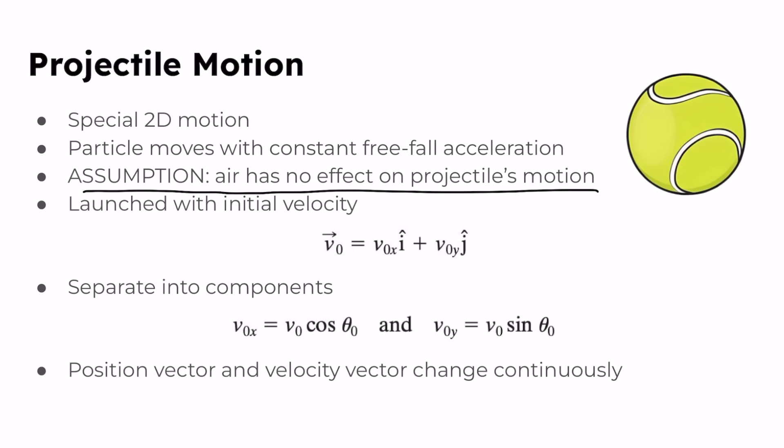The projectile is launched with some initial velocity vector, which can be broken down into its components vx initial and vy initial. This subscript zero notation indicates the initial velocity, because it's important to keep track of our velocities throughout projectile motion — whether it's our final velocity or our initial velocity. If you're confused about vectors and how to break them down into components, you can watch some of our previous videos.